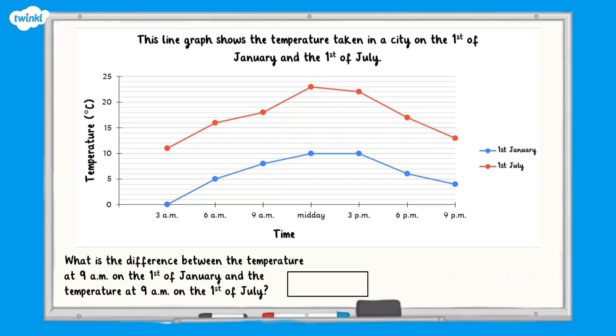Sometimes we might need to answer comparison questions about a line graph. For example, what was the difference between the temperature at 9am on the 1st of January and the temperature at 9am on the 1st of July?